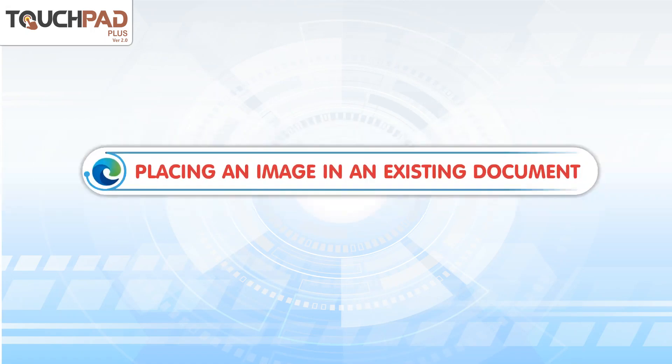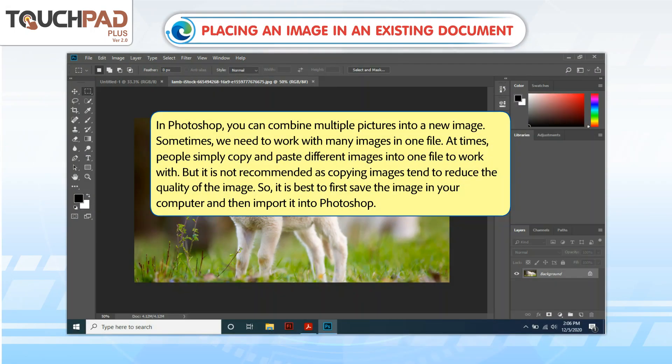Placing an image in an existing document in Photoshop — you can combine multiple pictures into a new image. Sometimes we need to work with many images in one file. People often copy and paste different images into one file, but this is not recommended as copying tends to reduce image quality. It is best to first save the image on your computer and then import it into Photoshop.